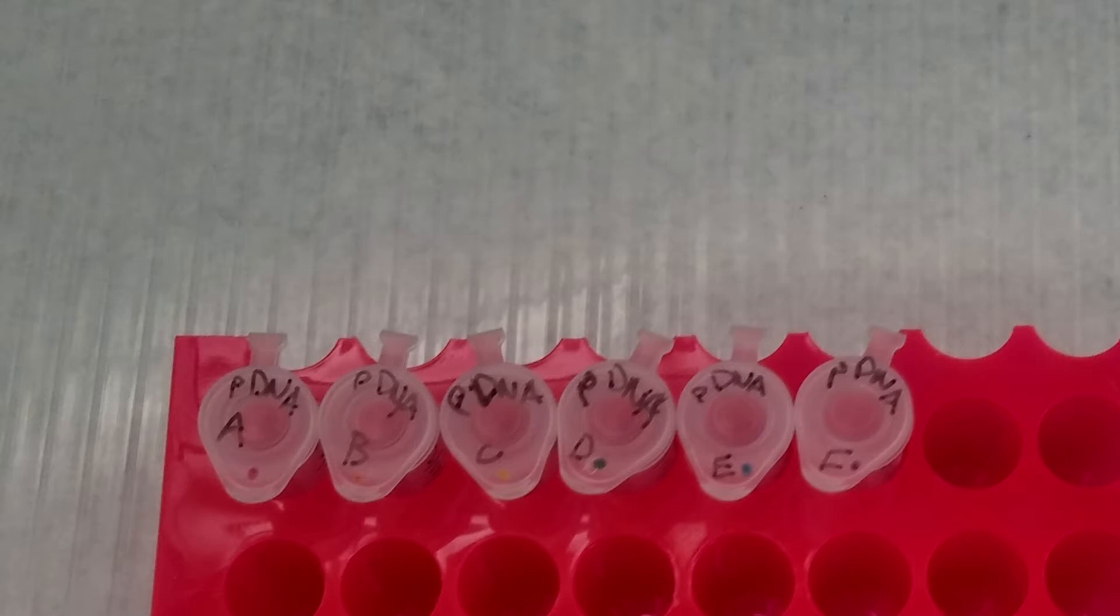To start off, two sets of eight 2 milliliter Eppendorfs are labeled A through F, P-DNA, standing for purified DNA, and today's date.